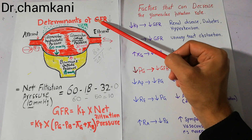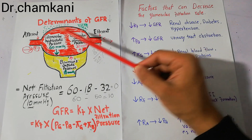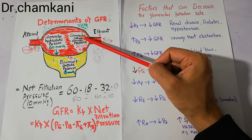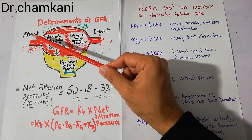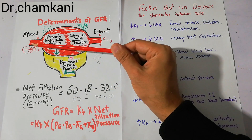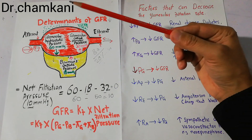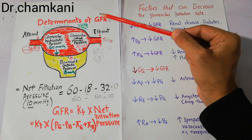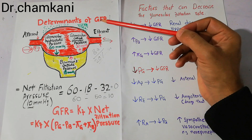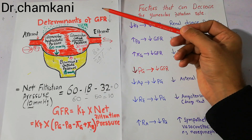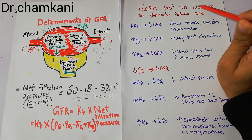The filtration of fluid from the glomerular capillaries into the Bowman's capsule is dependent upon glomerular hydrostatic pressure, glomerular colloid osmotic pressure, Bowman's capsule pressure, and the capillary coefficient. Similarly, the afferent arteriolar pressure, efferent arteriolar pressure, and arterial pressure are also important. All those factors which are determinants of GFR, if disturbed for any reason, can increase or decrease the GFR. But today we are going to focus on the factors that will decrease the GFR.